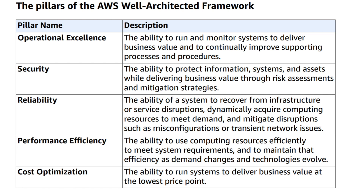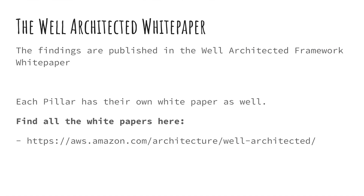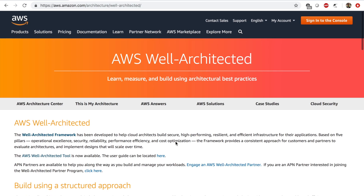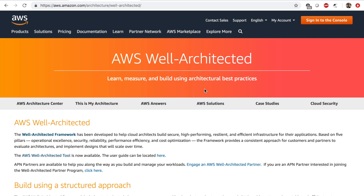So where can I find this framework? AWS has come up with the well-architected white paper. In this white paper, which is about 86 pages in length, you can find all the findings and best practices. Each pillar also has its own white paper, so there are overall six white papers. You can find all the white papers by visiting this link — the well-architected page on AWS.